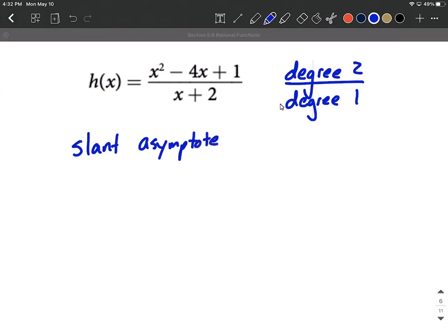All right, a slant asymptote is a little bit different than a horizontal asymptote. If your only decision was does it have a horizontal asymptote or not, you would answer no. But we can find the slant asymptote.